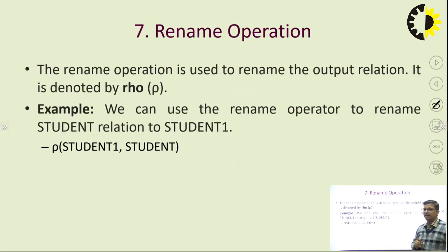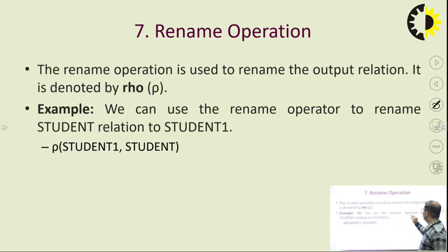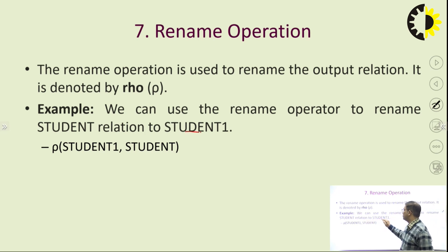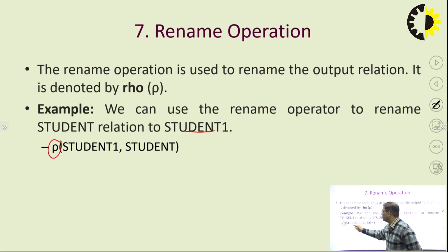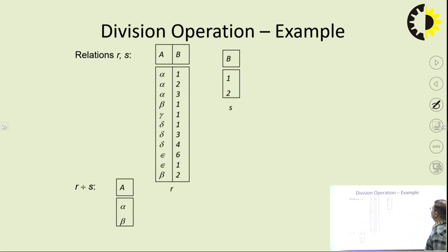Rename operation — this is the last basic operation. It is very simple: just to rename a given entity. The symbol is rho (ρ). For example, to rename the student relation to student1, you write ρ_{student1}(student). This is how you perform a rename operation.